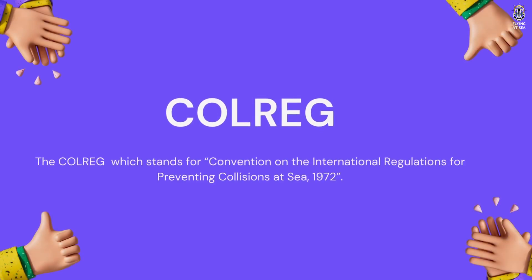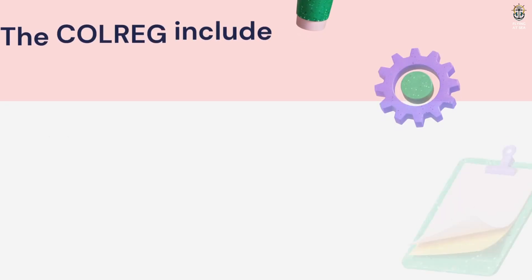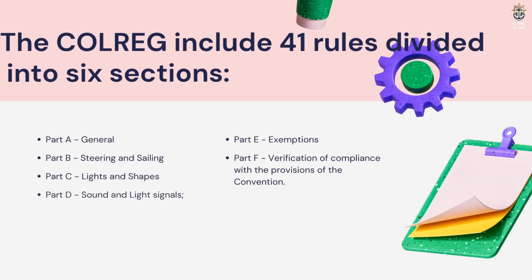The COLREGS, which stands for Convention on the International Regulations for Preventing Collisions at Sea, 1972. The COLREGS include 41 rules divided into six sections.